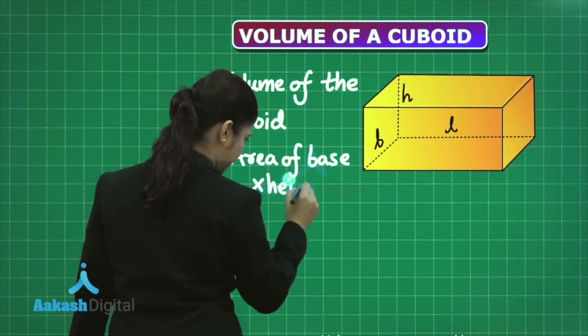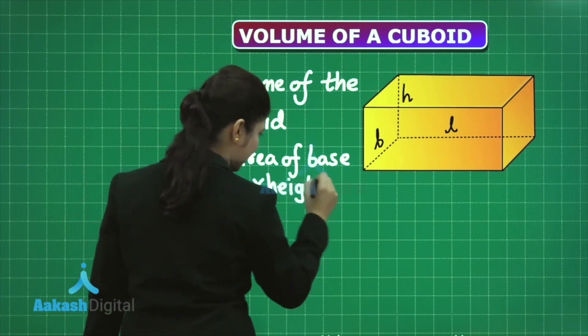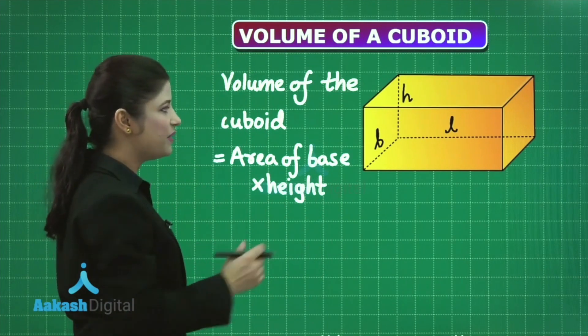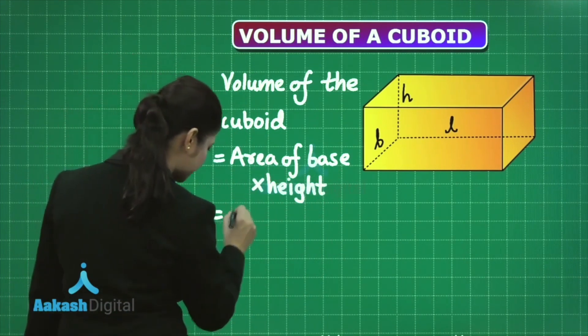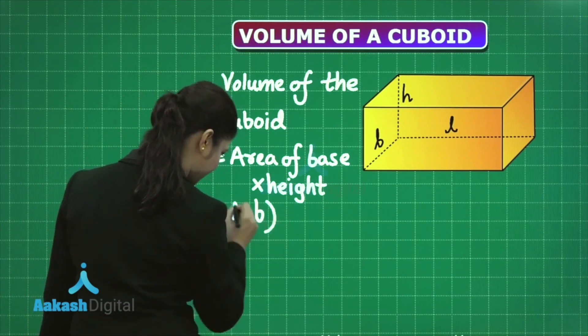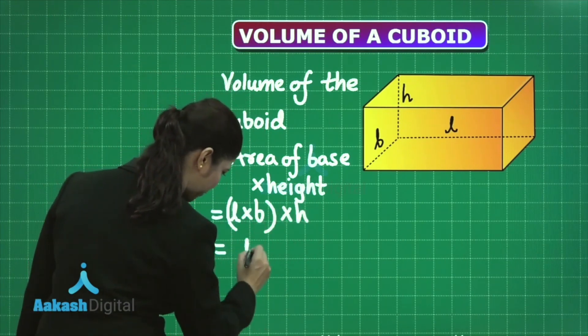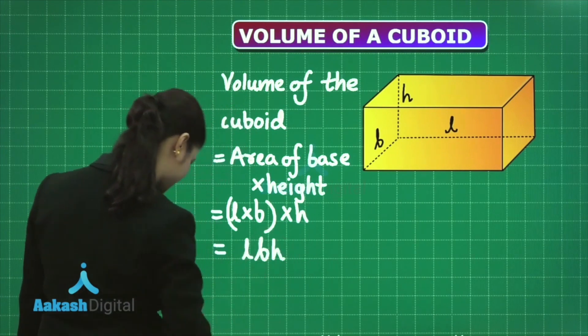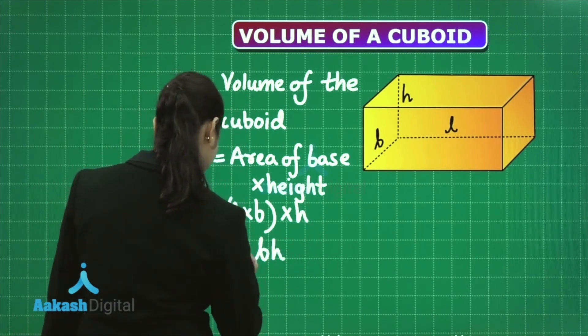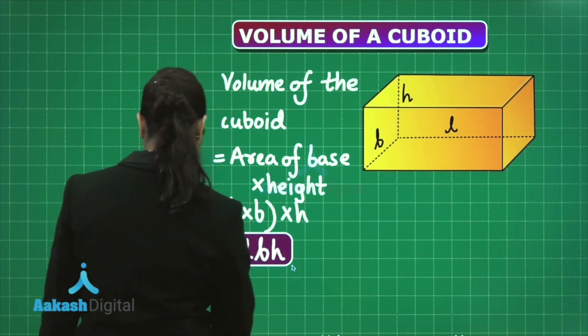The area of base times height—in this case, the base has dimensions L and B, so that's L × B. Area of base times height h gives the volume of the cuboid as L × B × H. You can denote the volume of the cuboid by V.